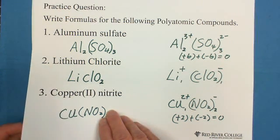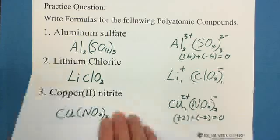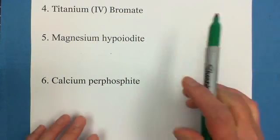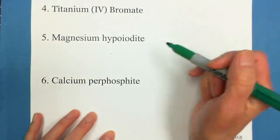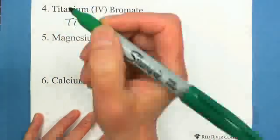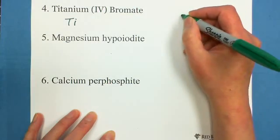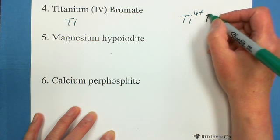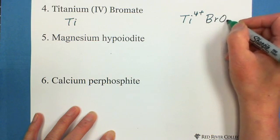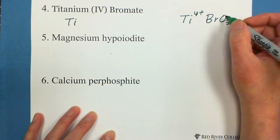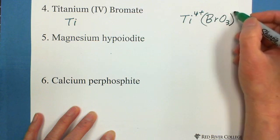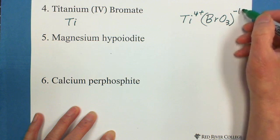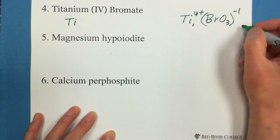We still have the other 3 practice questions. Titanium(IV) bromate. Titanium is Ti4, that means titanium with 4 positive charge. Bromate is BrO3, and bromate also with negative 1 charge. So the 1 goes to this corner, the 4 goes to this corner.